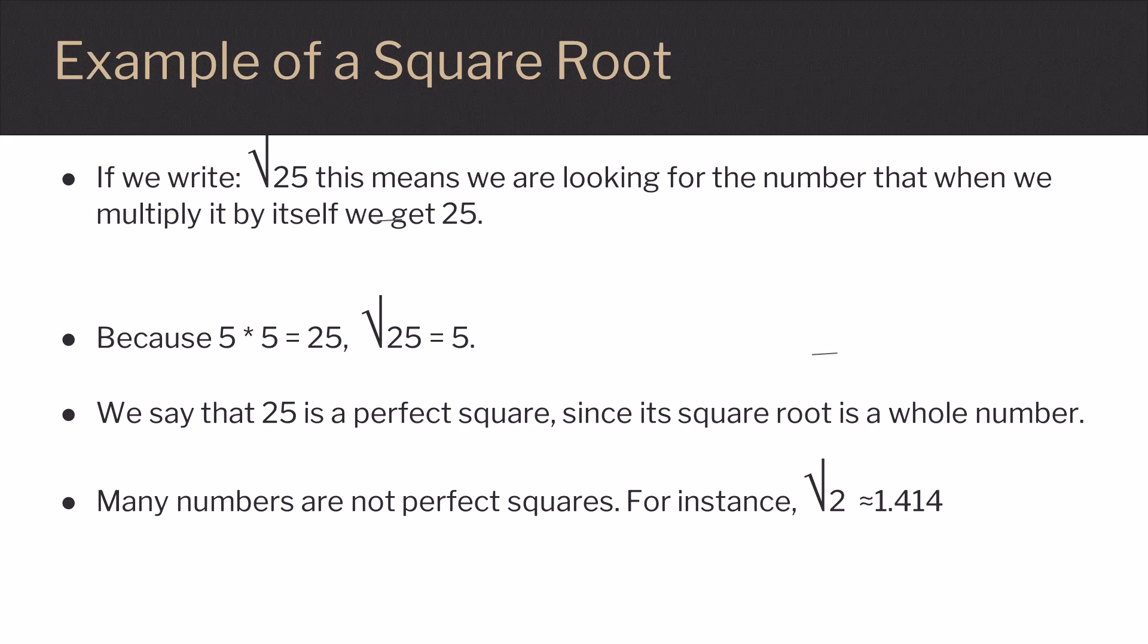Because 5 times 5 equals 25, the square root of 25 equals 5. We say that 25 is a perfect square because its square root is a whole number.